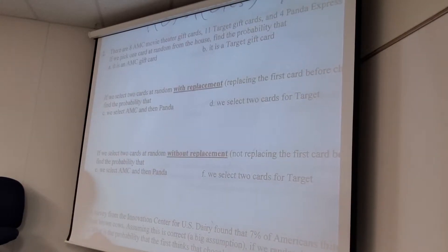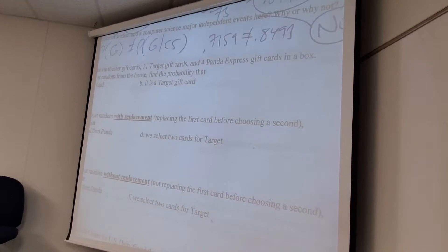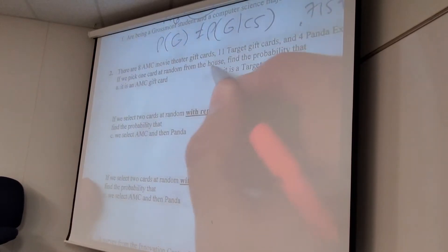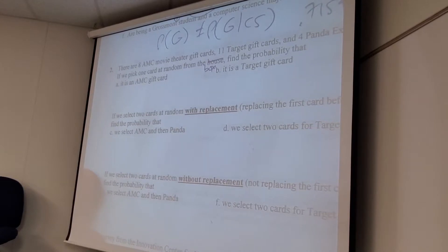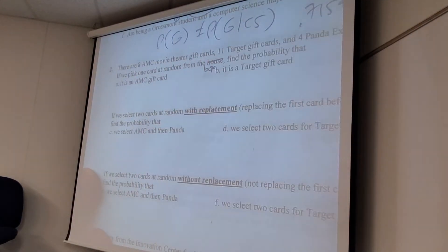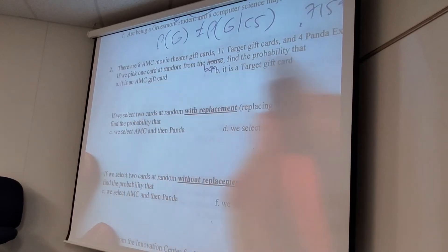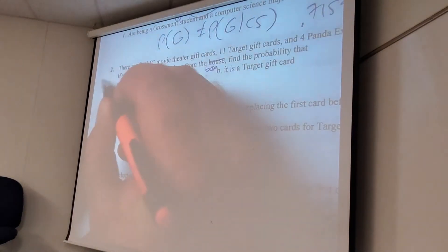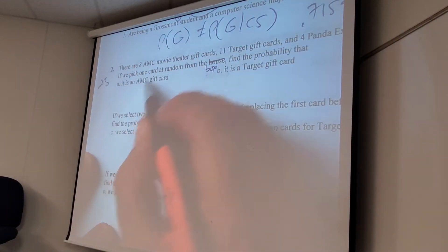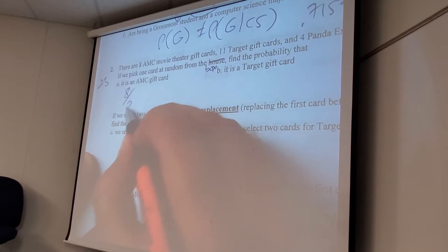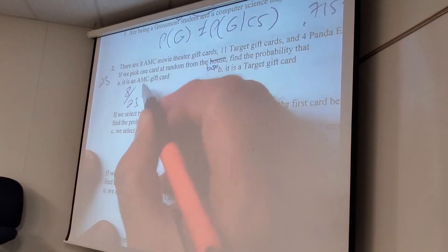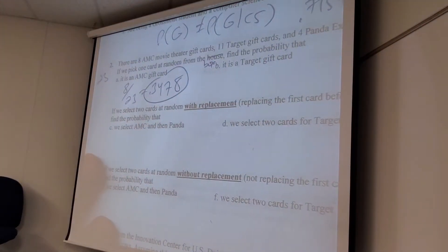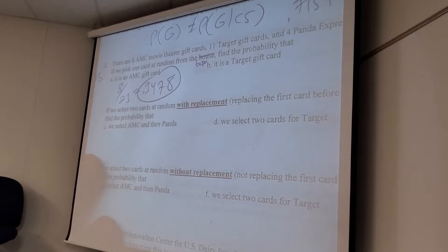All right. I like one card at random from the house. In a box. I love it. So, the first piece of this is one card, so this shouldn't be too bad, right? What's the probability? It's an AMC. How many total cards am I talking about? 23. Out of those, how many are AMC? 8. So, 8 out of 23, whatever the hell that is. 3478. Wow. Cool. In stereo. 3, 4, 7, 8?